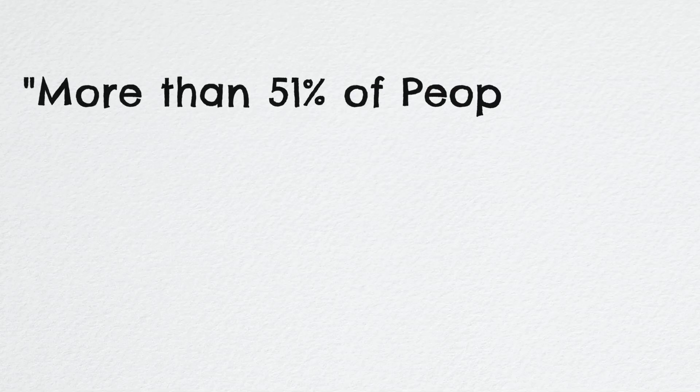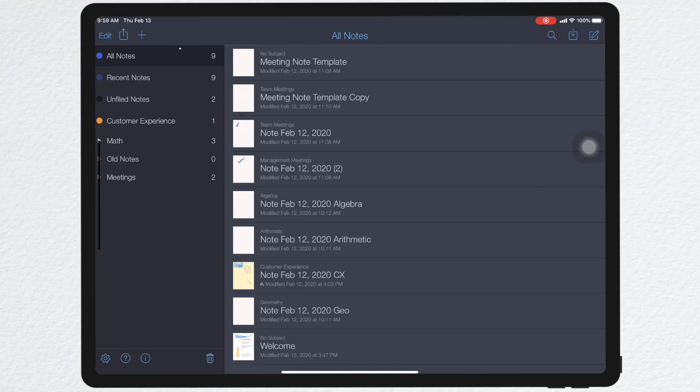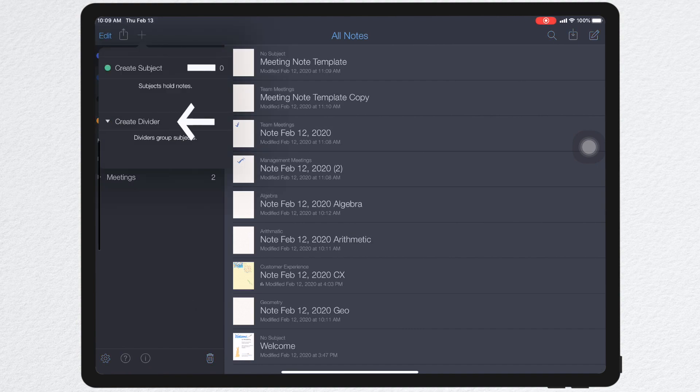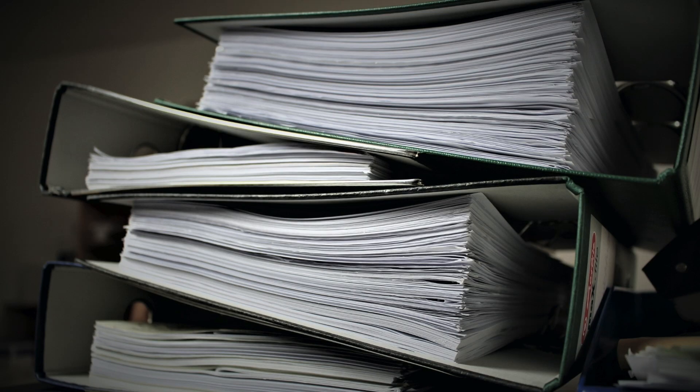Survey results show that more than 51% of people spend more than 30 minutes per day searching for documents, so you may want to pay attention to this. Notability helps you organize your notes. As a default, you get all notes and unfiled notes. By pressing the plus button, you can organize into dividers, subjects, and notes. Dividers group subjects; subjects hold notes — consider the whole thing a digital binder.